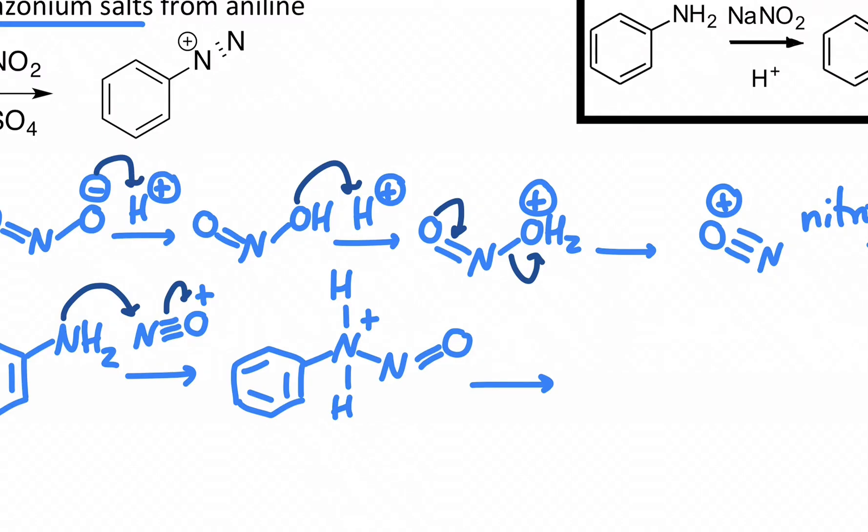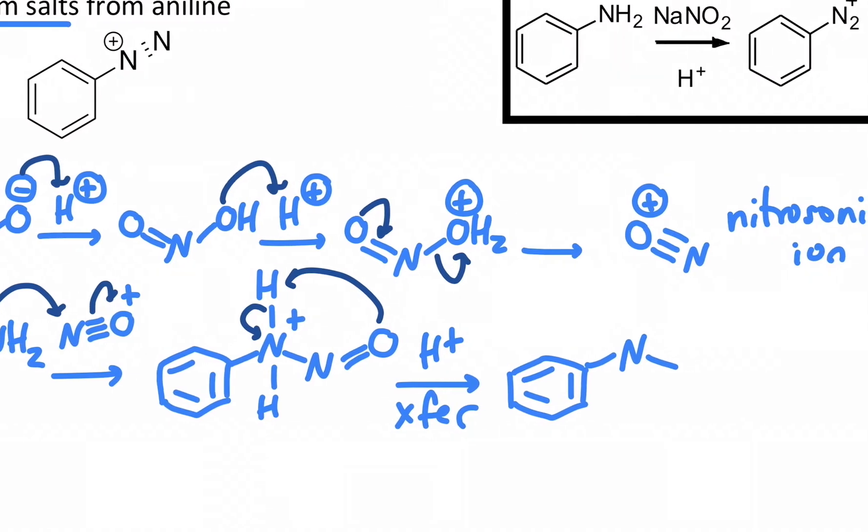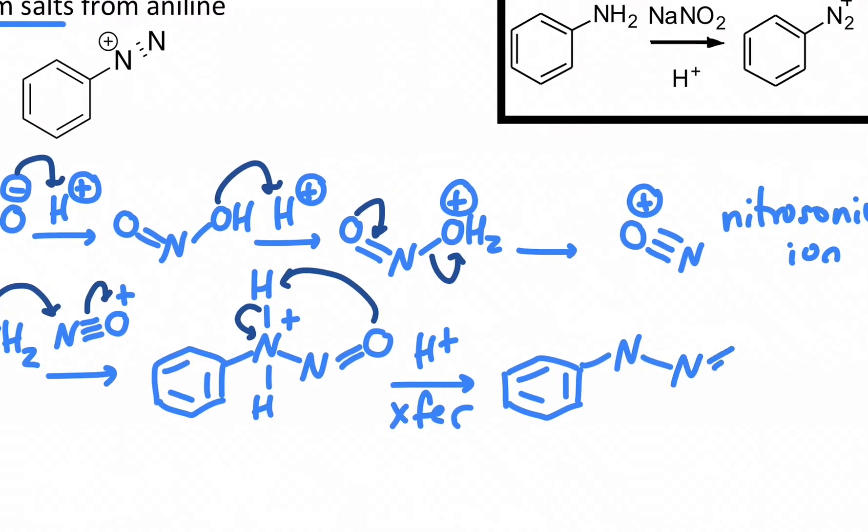So a proton transfer, remember, probably happens intermolecularly. I'm just going to shortcut it and show it intramolecularly, but it really probably happens in two steps. They are very fast, and we've seen them in a variety of different mechanisms, and we're going to continue to see them. It's just from a hydrogen jumping from one heteroatom to a different heteroatom.